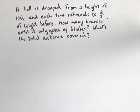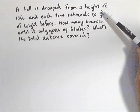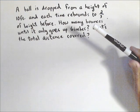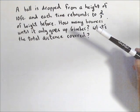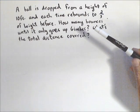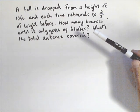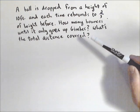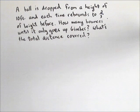So we have a pretty interesting problem here. We have a ball that's dropped from a height of 10 feet, and each time it rebounds to two-thirds of its height before. So a couple questions we might ask about that: How many bounces until it goes up only six inches or less? And what's the total distance covered?